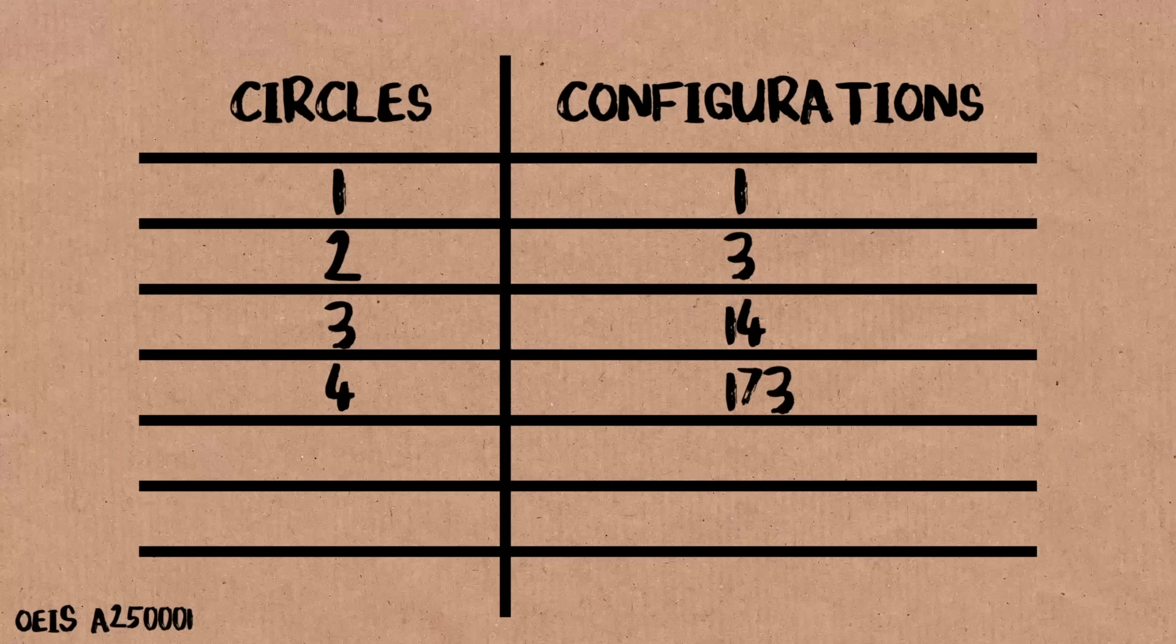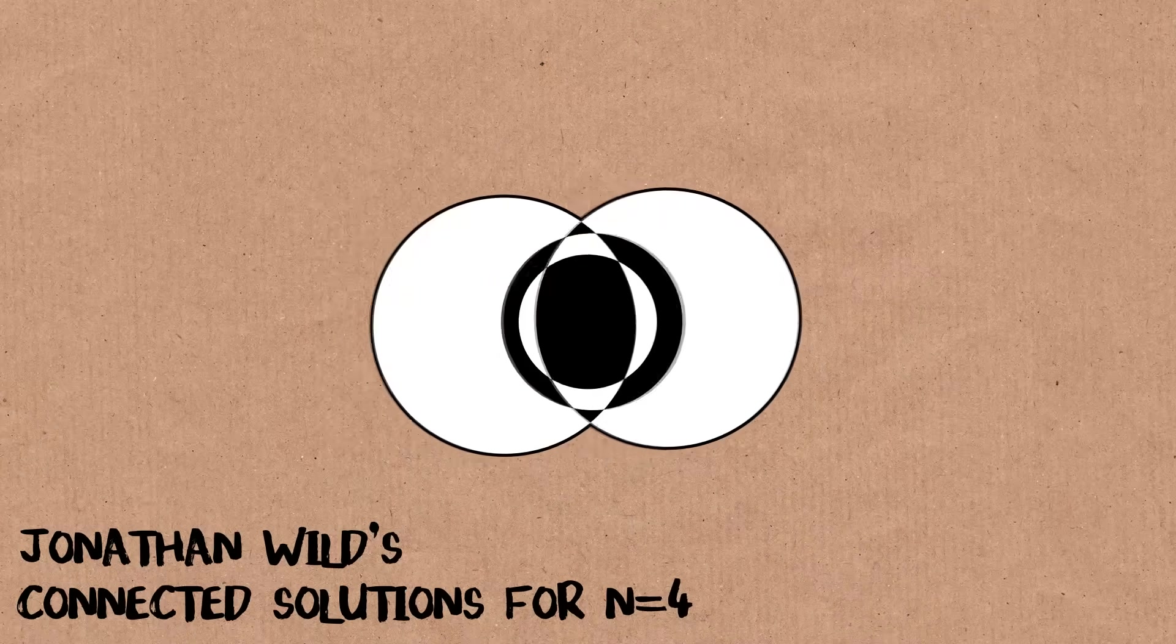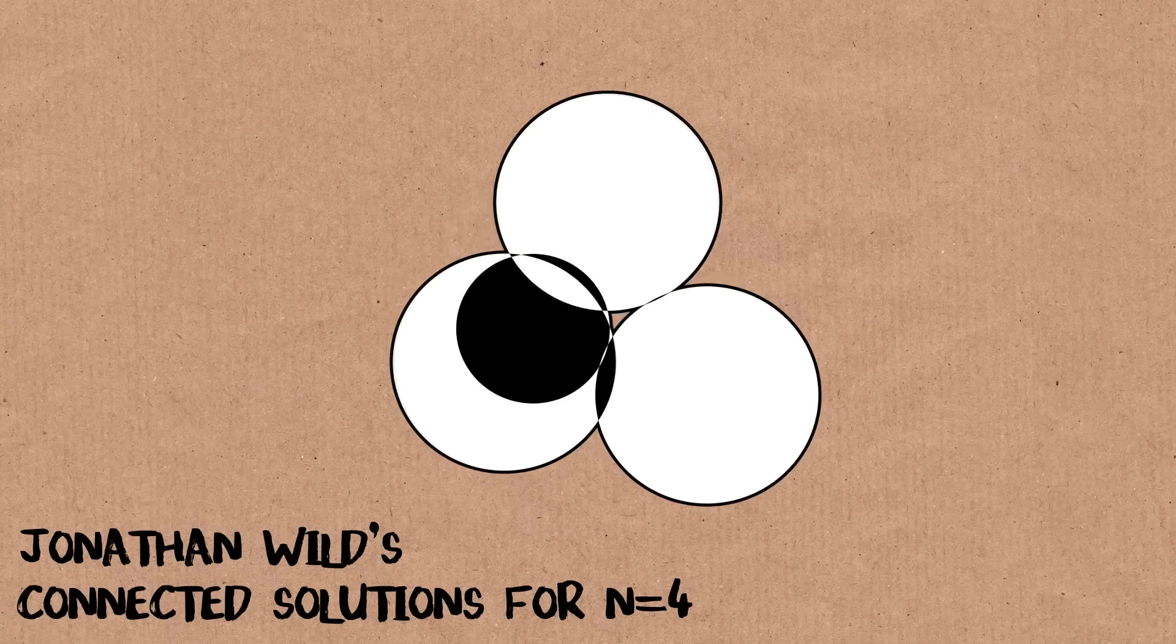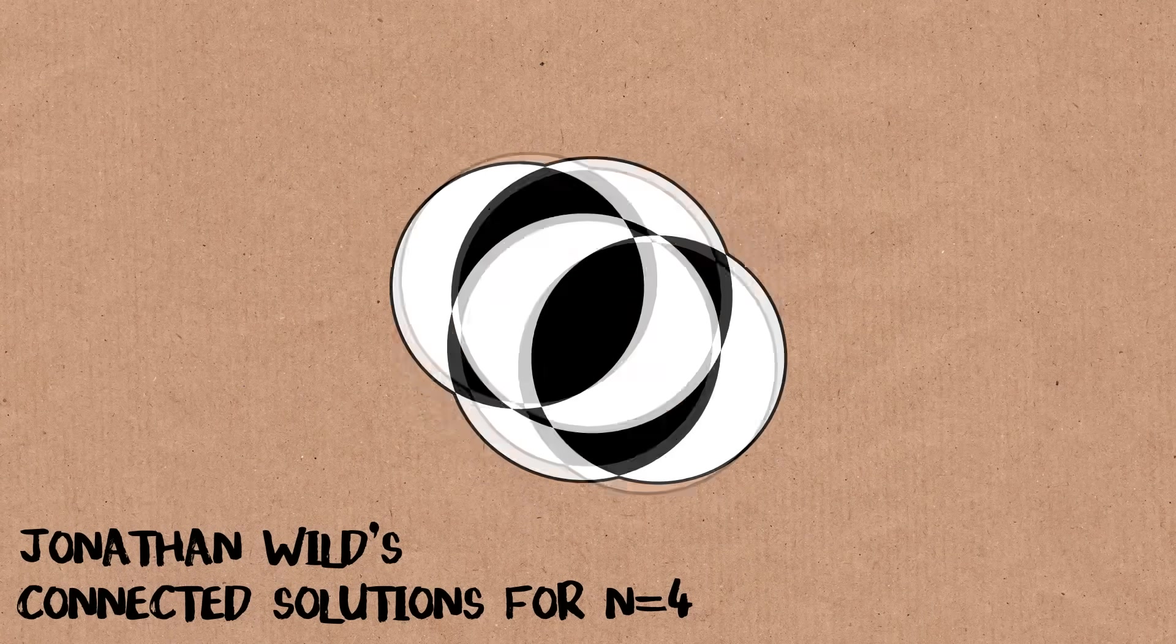And even for three, yeah, the arrangements are quite pretty, but when Jonathan Wilde classified the four circles and five circles, the pictures, some of them are really amazing. They're just brilliant. I mean, this is mathematics, this is geometry, but the results are fantastic, and I'd like to show you.